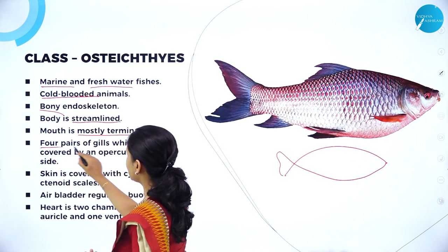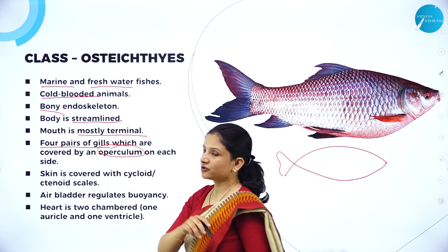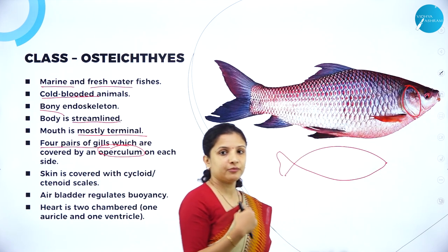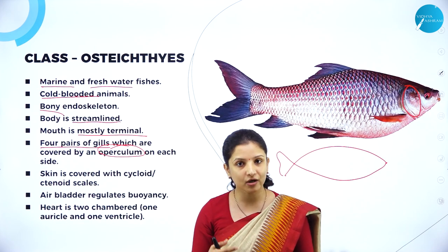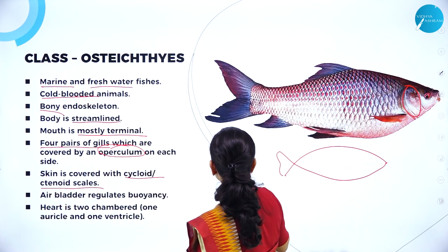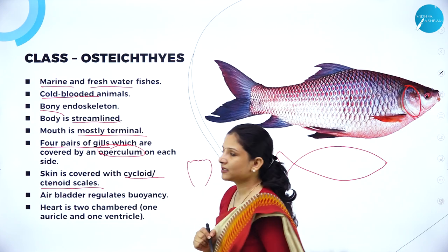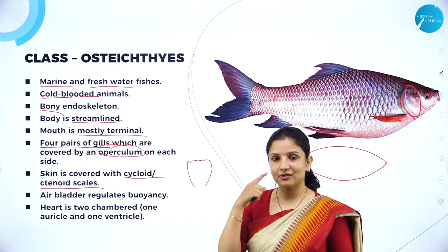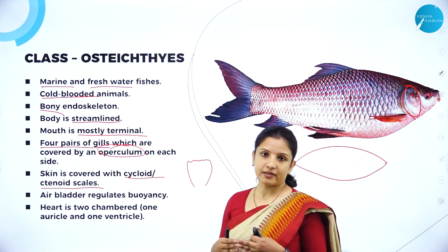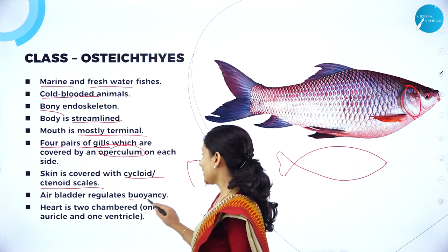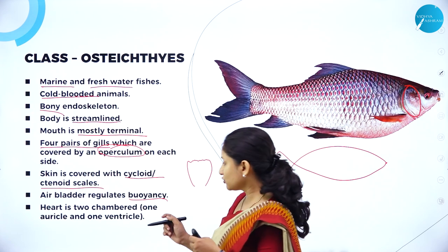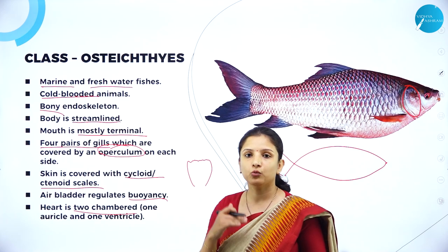They have four pairs of gills and the gills are covered by an operculum, so we cannot see the gill slits. Inside the operculum you can find the gill slit. Chondrichthyes did not have an operculum — their gill slits were visible. The skin is covered by cycloid or ctenoid scales, unlike Chondrichthyes which had placoid scales resembling teeth. They have an air bladder, which is why they are buoyant and capable of floating in water — even if they stop swimming, they will not drown. They have a two-chambered heart with one auricle and one ventricle.